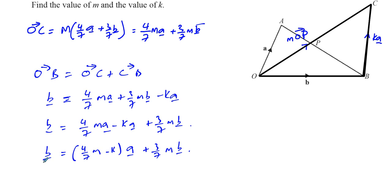If these two vectors are equal to each other, this vector b is equal to that vector b, they're equal to each other, then they must have exactly the same components of a and b. Now, on this side, you have 0 a and you have 1 b. The number of a's on the left must be the same as the number of a's on the right, similarly with the b's. So I can say, if I compare the a's from both sides, I can say on that side, 0 is equal to 4 over 7 m minus ka. So I have one equation.